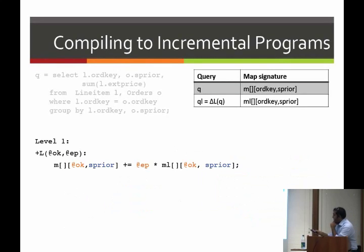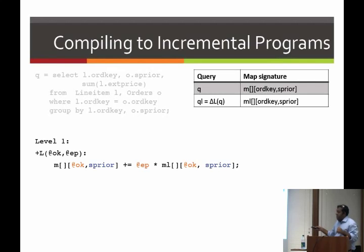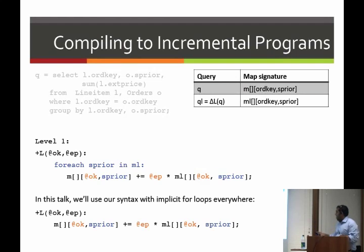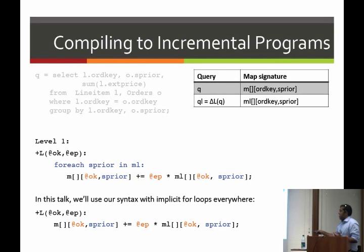We create a map out of this — we materialize this delta query. The map that comes from this delta query has two parameters: order key and S-price. Order key is fixed since it comes from the input. Looking at the statement: to maintain map M, we use the constant value of EP and do a lookup into map ML, which is the materialization of delta-L. Since S-price doesn't exist in the input, it's part of the output map. This statement means: loop over this map, and for every entry, apply this computation — for every entry S-price in ML, assign this value. That was the process for one level of compilation.